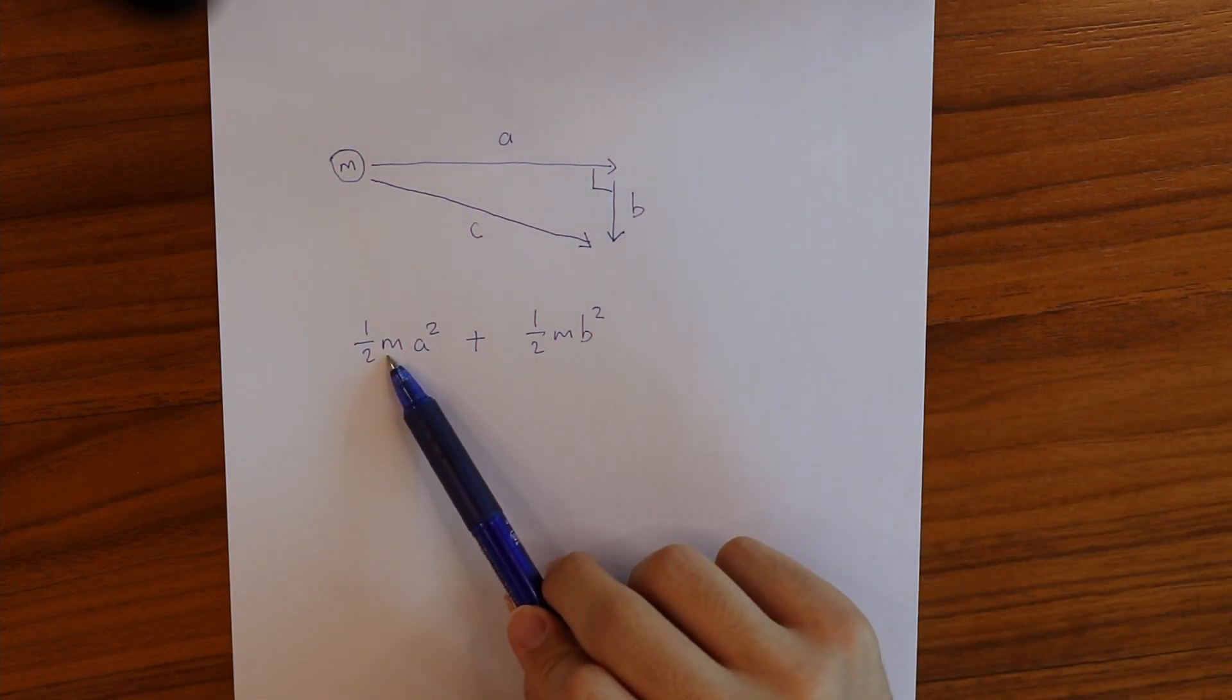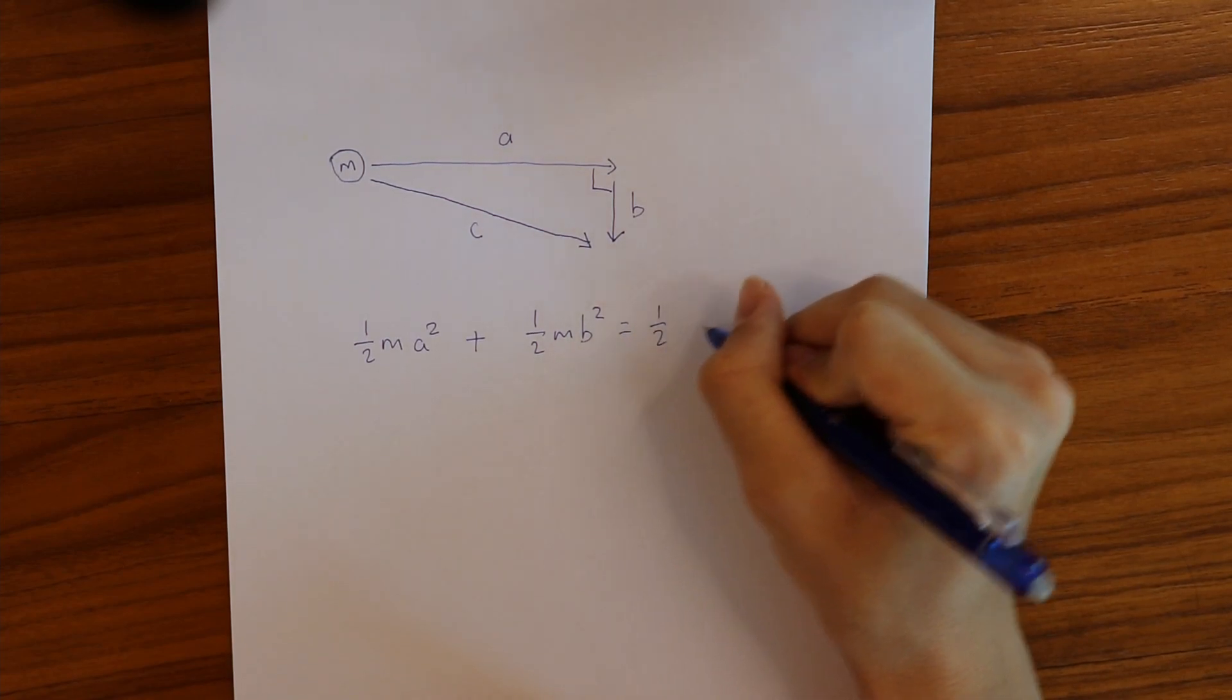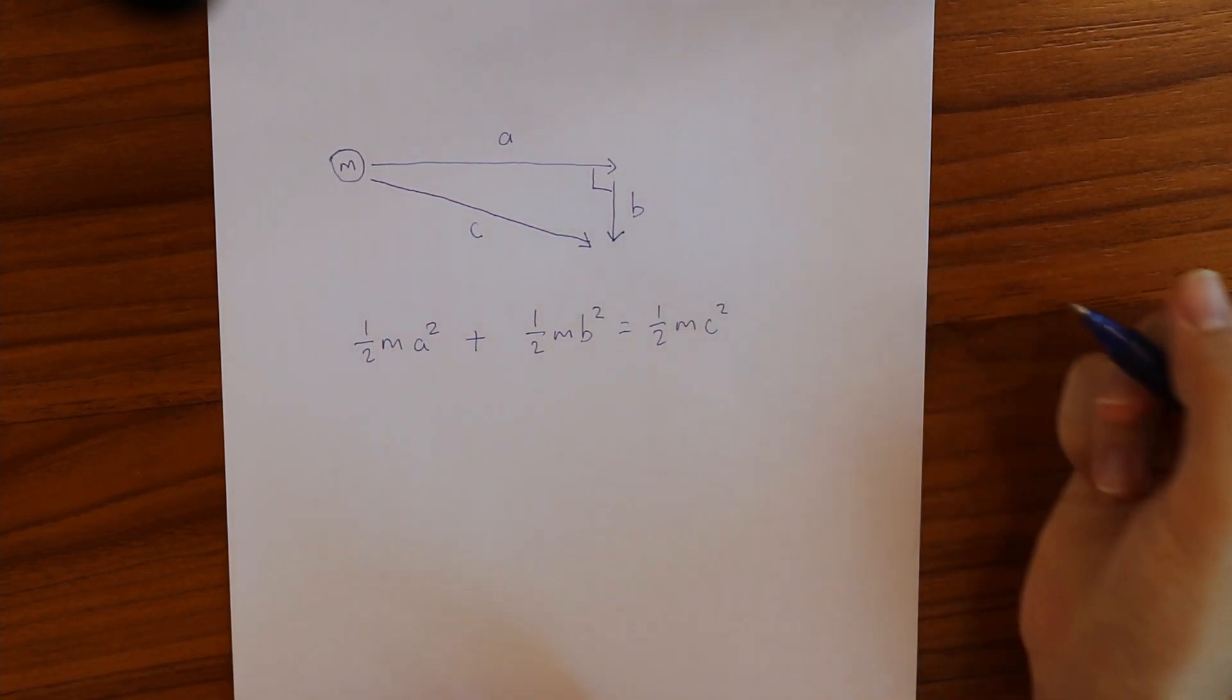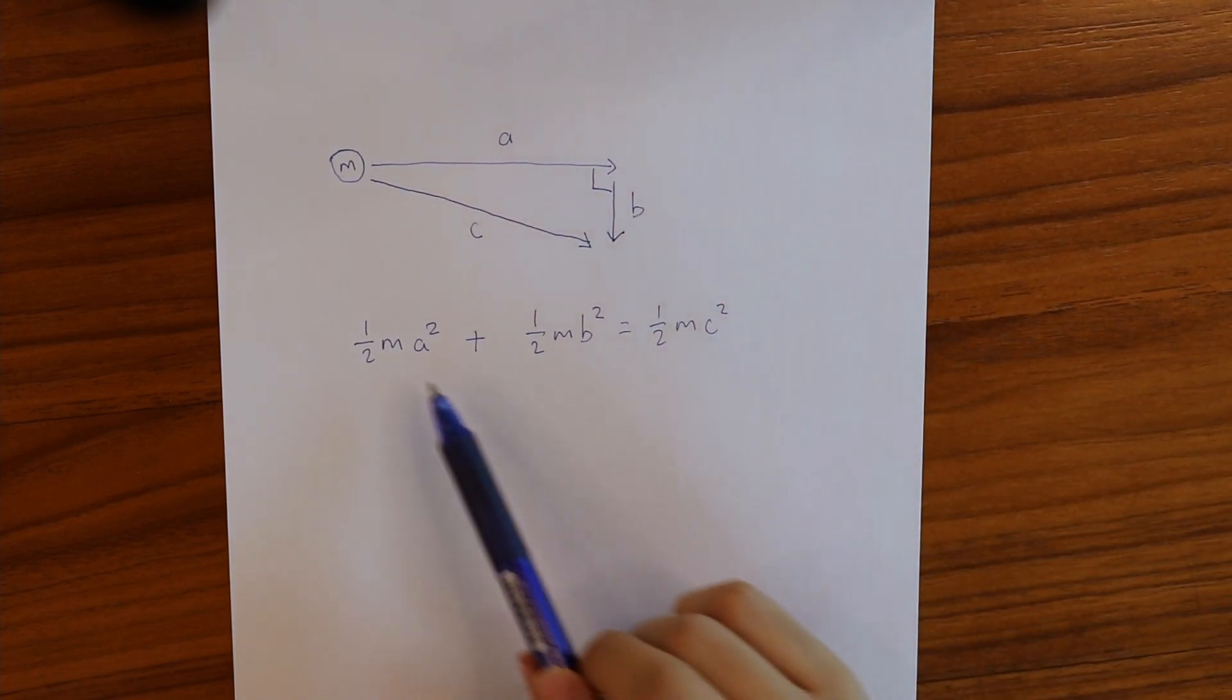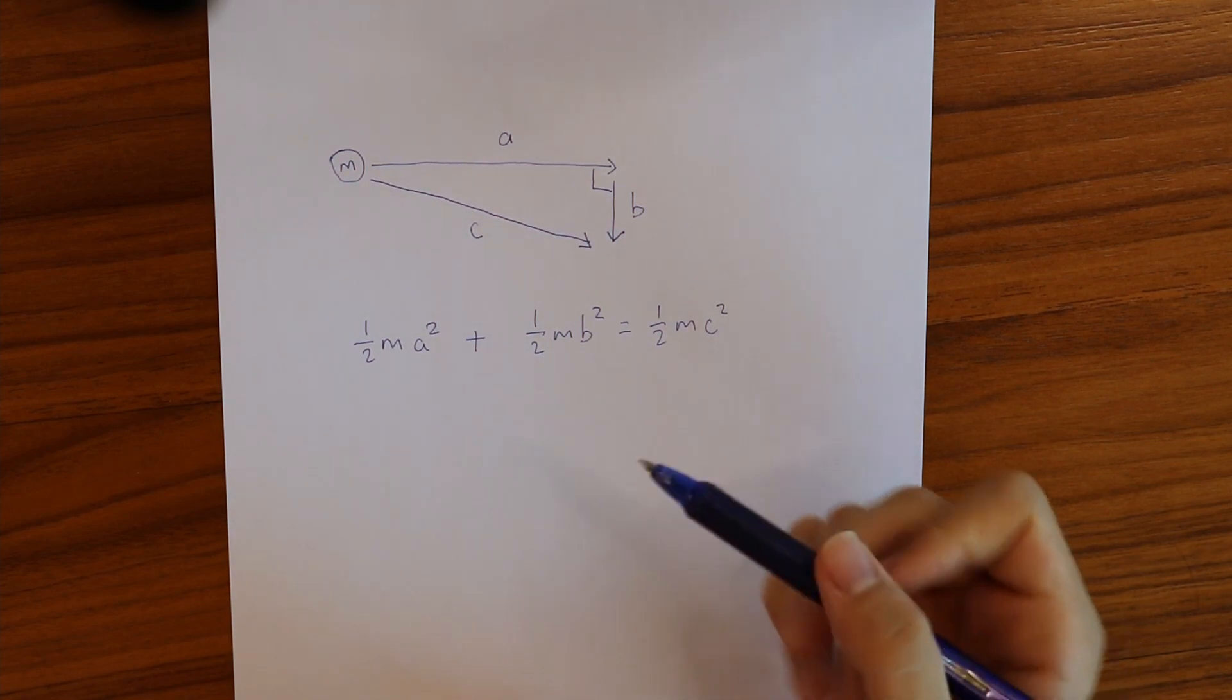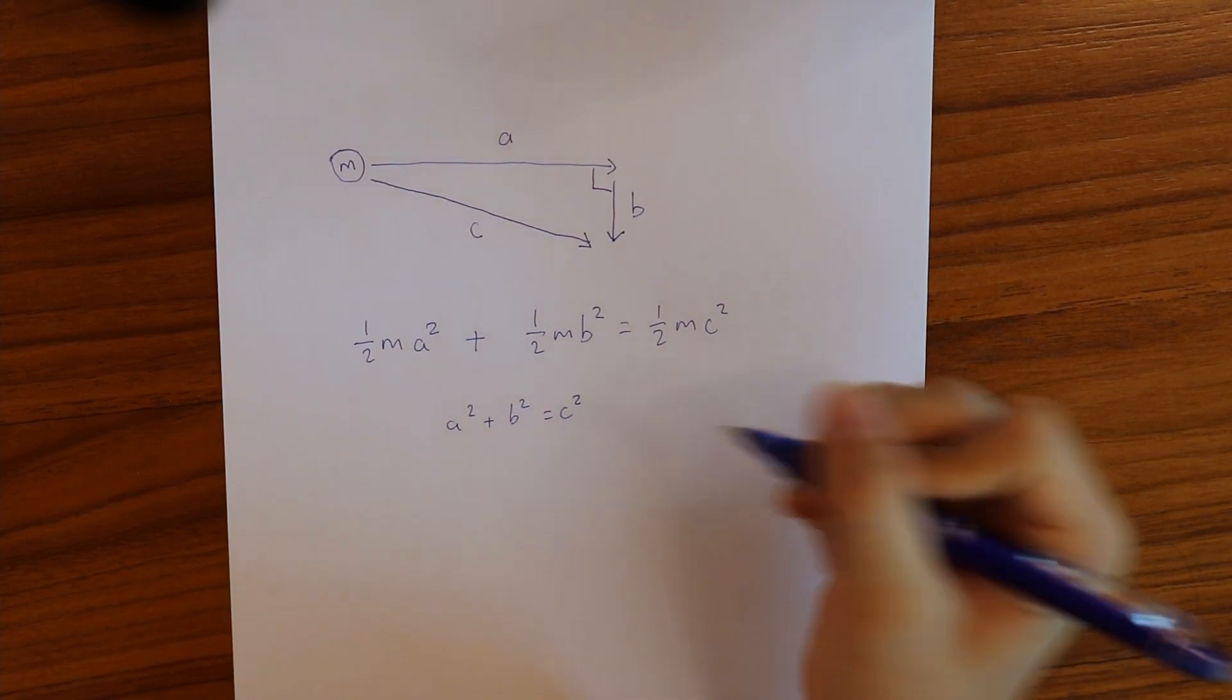So half m a squared plus half m b squared must equal half m c squared. This creates a relationship between the three speeds, and since they're the sides of a right triangle, by dividing both sides by half m, we end up with the Pythagorean theorem: a squared plus b squared equals c squared.